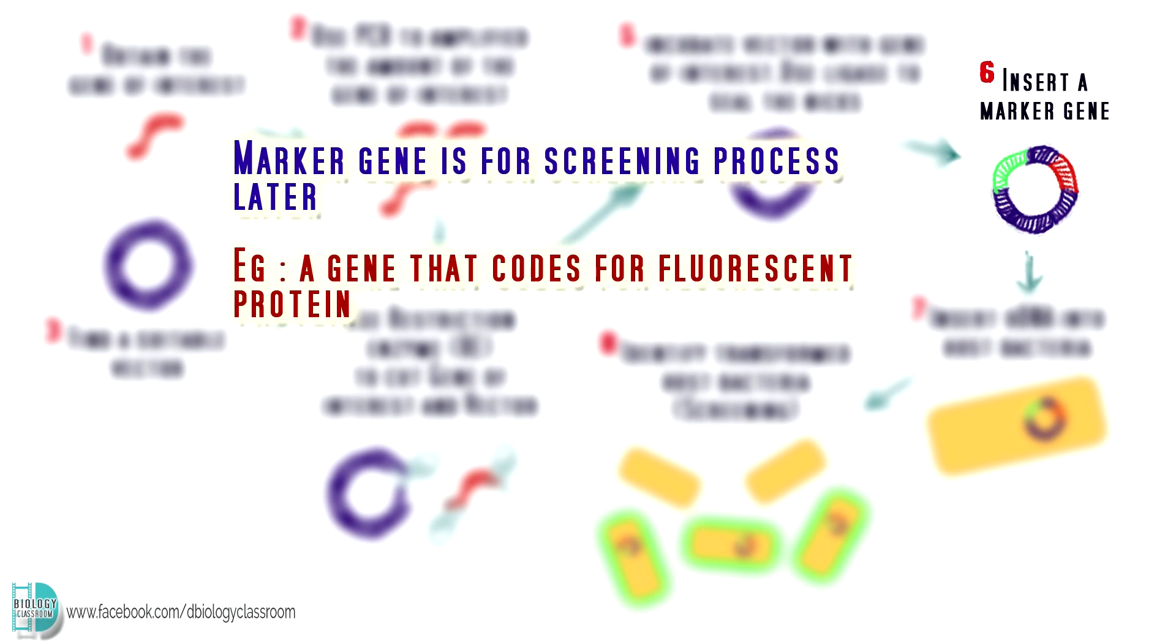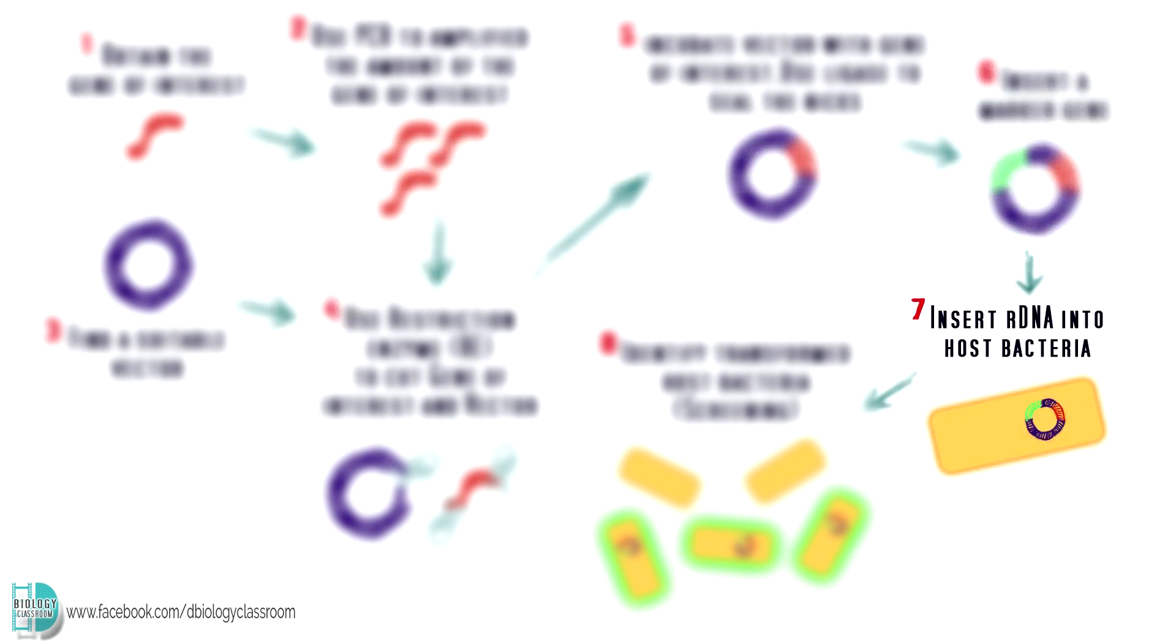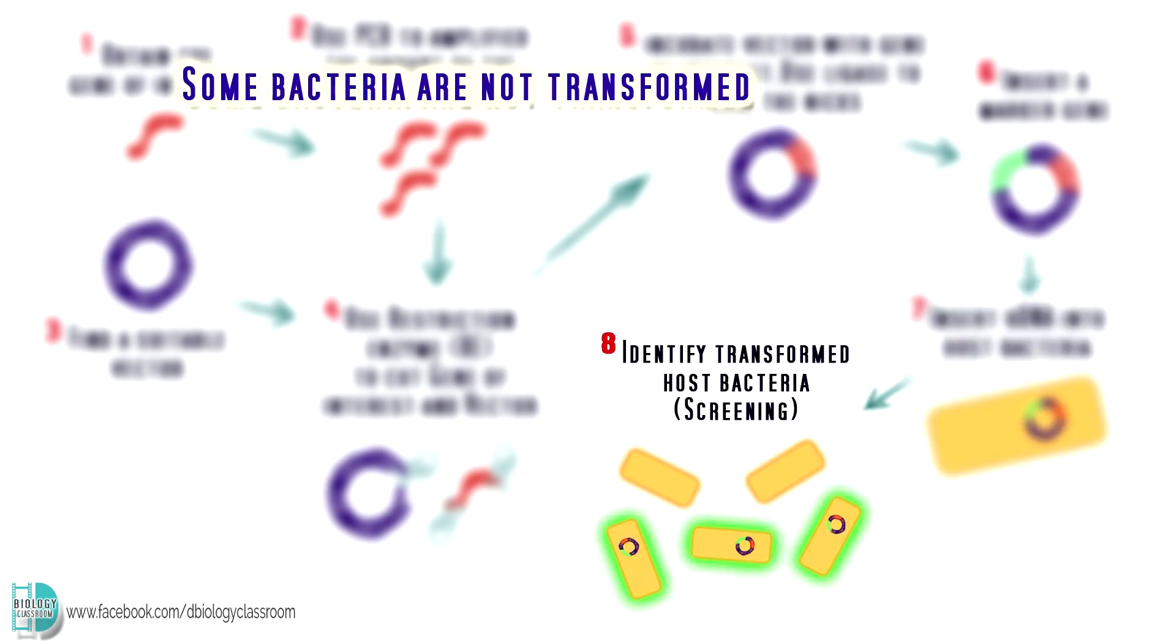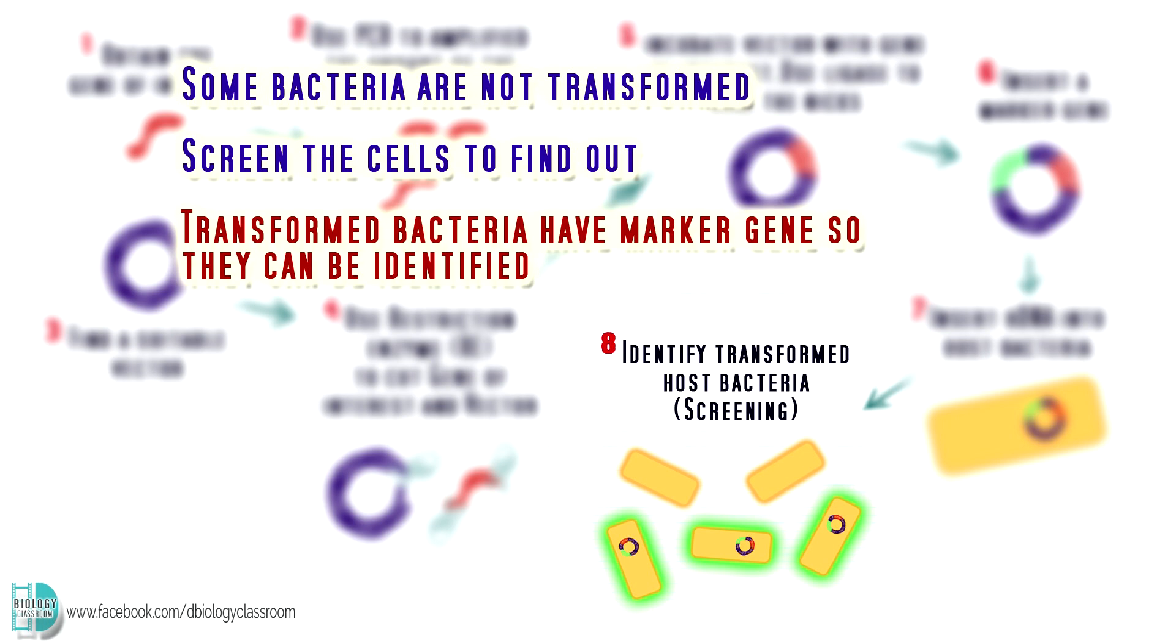Use the same way to add another piece of DNA which can act as a marker gene into the vector. For example, a gene that codes for fluorescent protein. Now, insert the recombinant DNA into the host cell. This process is known as transformation. Not all bacteria would take up the recombinant DNA. So, a screening process is needed to recognize the successfully transformed bacteria. Since a fluorescent gene is present in the recombinant DNA, cells which were successfully transformed will glow under the UV light. Only those cells are taken and cultured to obtain insulin.